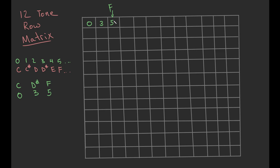So here we go — zero, three, five, nine, two, six, seven, one... we're missing a four and an eight. I don't like having four, eight, zero at the end because it sounds like an augmented triad, so let's rearrange: put eight here, A there, and four there. Maybe that's a little better — that's fine, let's continue.